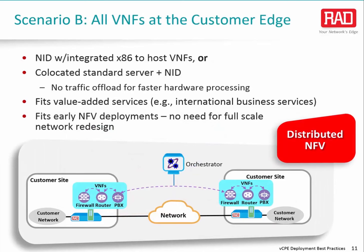In this scenario, both types of VCPE functionalities, physical and virtualized, are placed at customer end sites, while no VNFs are deployed in a central network location. A recommended way to implement this would be to use a network interface device, or NID, with an integrated compute platform such as an x86 server. This platform acts as the NFV infrastructure on which VNFs run. Another way would be to use a standalone server co-located with a NID. The problem with such a solution is that its per-application traffic handling is less than optimal. It can also support traffic offload, where some traffic processing is performed in hardware to increase speed and reduce delay. Such centerless implementation fits early NFV deployment stages, allowing service providers to launch NFV-based services without heavy investment in full-scale data center upgrades or network redesign.